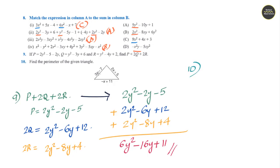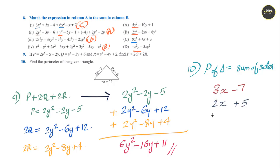Question 10: We need to find the perimeter of the given triangle. The perimeter is the sum of all sides. First side is 3x minus 7, second is 2x plus 5, third is minus x plus 11. Adding like terms: 3x plus 2x minus x gives 4x. Then minus 7 plus 5 is minus 2; minus 2 plus 11 is 9. Perimeter is 4x plus 9.